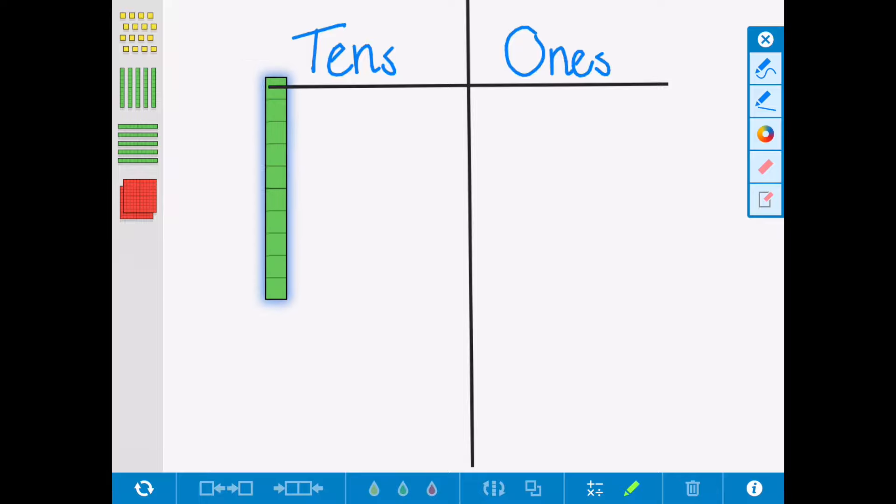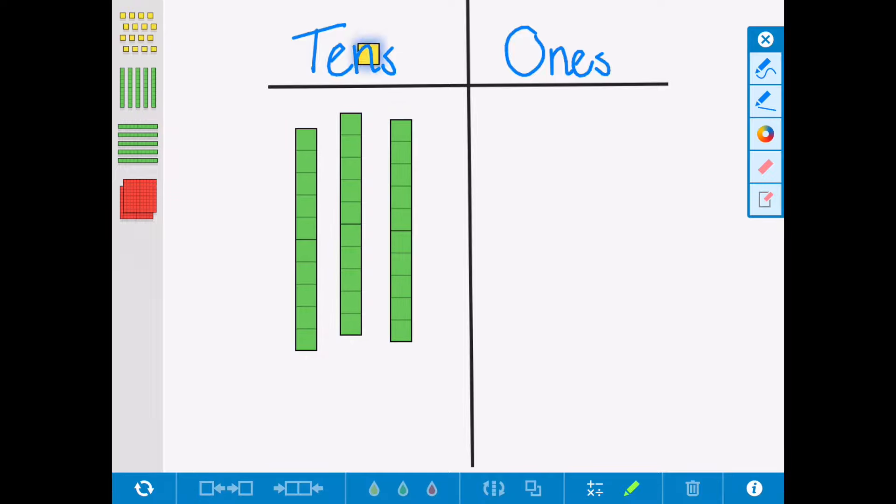I would start with ten, twenty, thirty, thirty-one, thirty-two, thirty-three, thirty-four, thirty-five, and thirty-six. We also encourage the children to write the number that they've made.